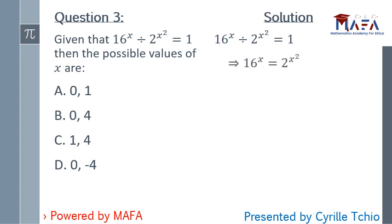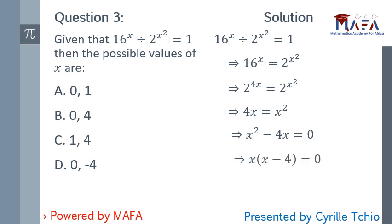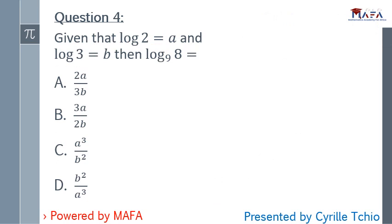Multiply both sides by 2 to the power x², giving 16^x equals 2^(x²). Since 16 equals 2⁴, we have 2^(4x) equals 2^(x²). Since the bases are the same, equate the powers: 4x equals x², so x² minus 4x equals 0. Factoring: x(x − 4) equals 0, giving x equals 0 or x equals 4. The answer is B.